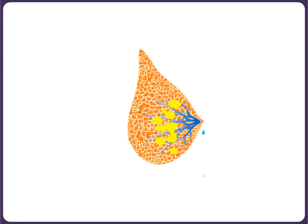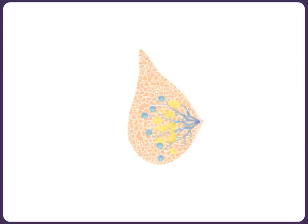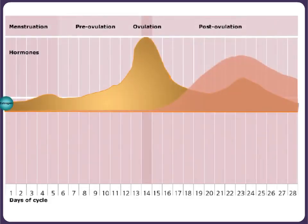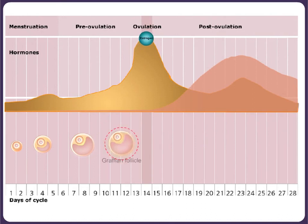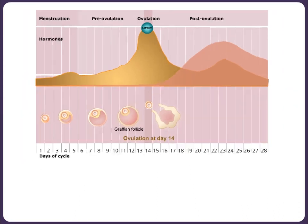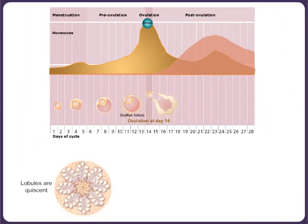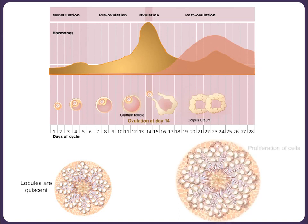Progesterone also causes secretion within the acinus and is responsible for retention of water within the breast stroma. The blood levels of estrogen and progesterone change with the menstrual cycle. From day 0 of the menstrual cycle, there is a rise in the level of estrogen with formation of the Graafian follicle in the follicular phase. Lobules are quiescent in this phase. In the post-ovulatory phase, there is a second peak of estrogen along with rising levels of progesterone from the corpus luteum.